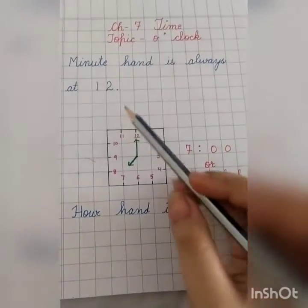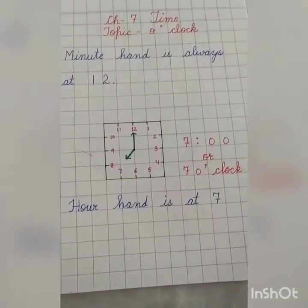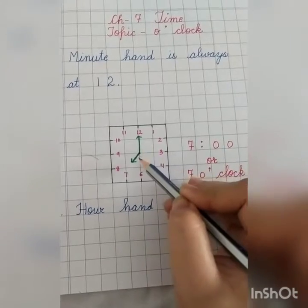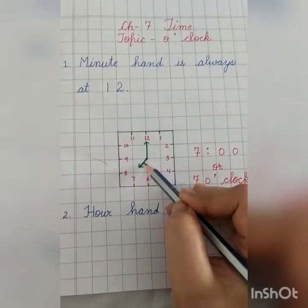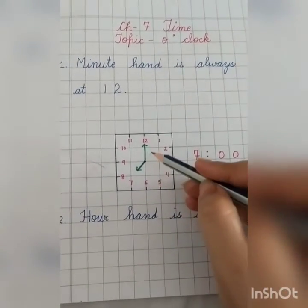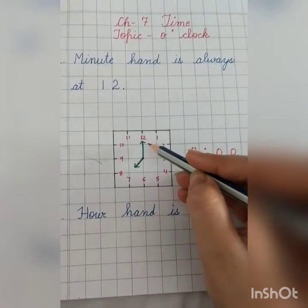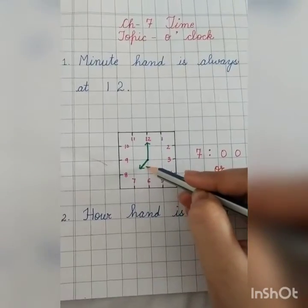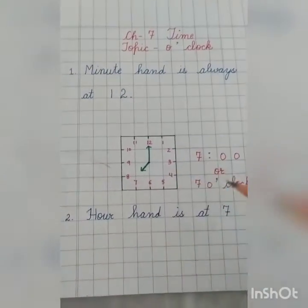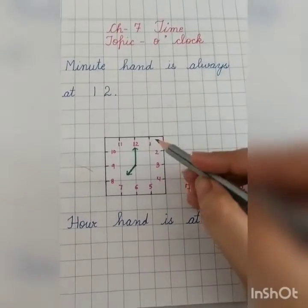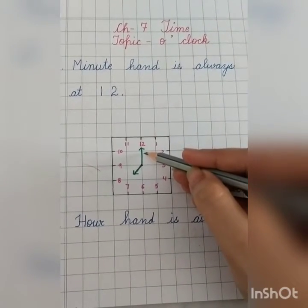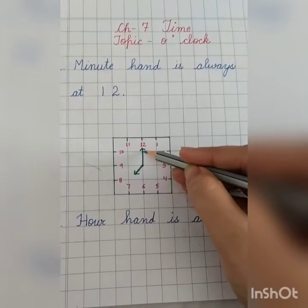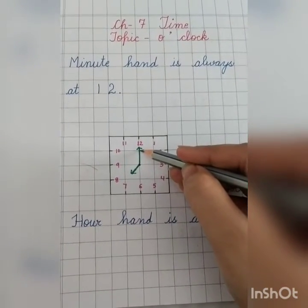In a clock there are two hands, as you have already learned. One is the minute hand and the second one is the hour hand. In o'clock, the long hand — the minute hand — is always at twelve.